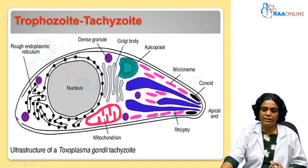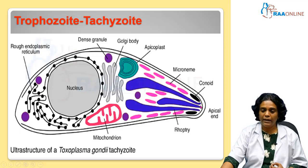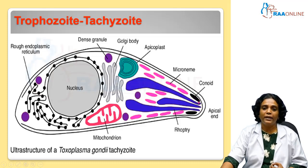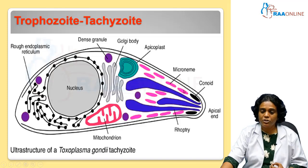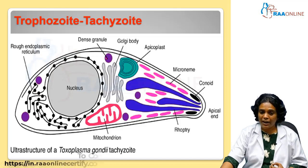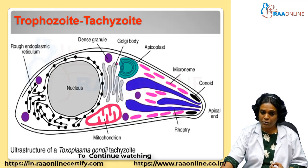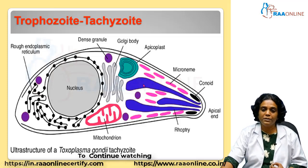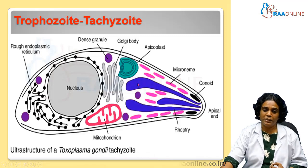This is the typical structure of a trophozoite or tachyzoite — it has that arc shape, with the nucleus present at the blunt end. The structures at the apical end include the conoid, which helps the tachyzoite to penetrate inside the host cell, the micronemes, which help in binding to the host cell, and the rhoptries and dense granules present in the cytoplasm, which provide a good environment for the parasite to multiply.